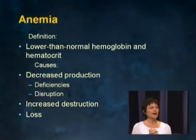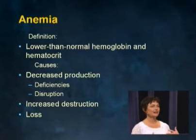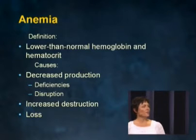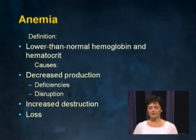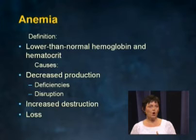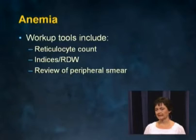People become anemic for lots of different reasons. They become anemic because the bone marrow quits producing — either because it's deficient in something, or because something else is going on in the bone marrow prohibiting it from producing red cells. Or you become anemic because you destroyed those red cells after making them, or because you lose them. That last one is probably the most common thing an internist would see.